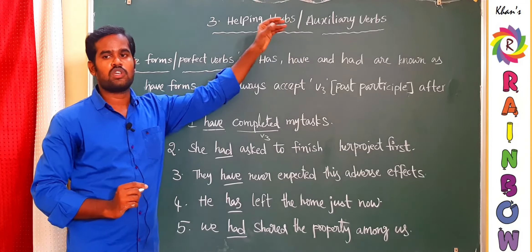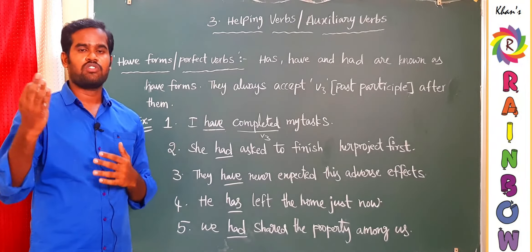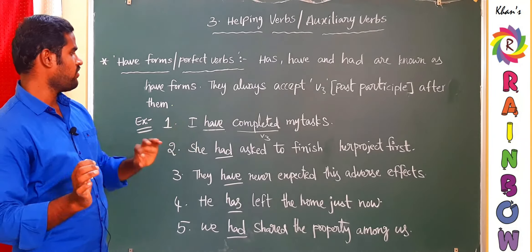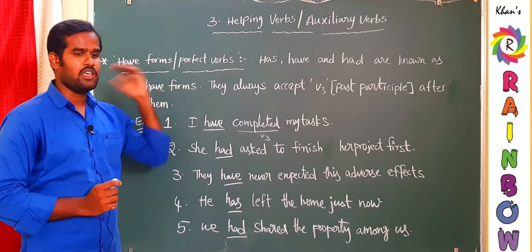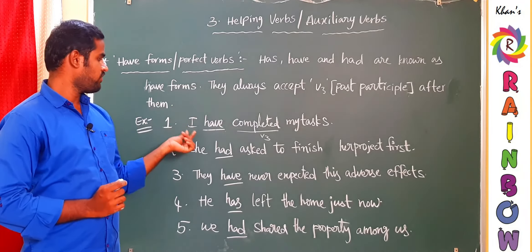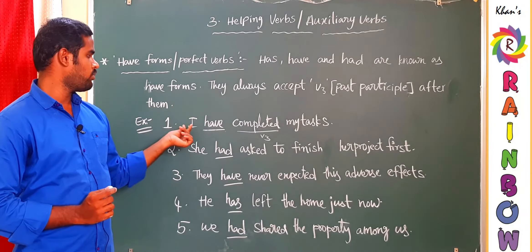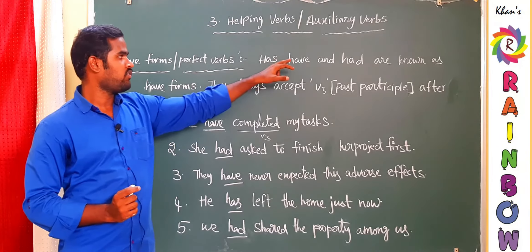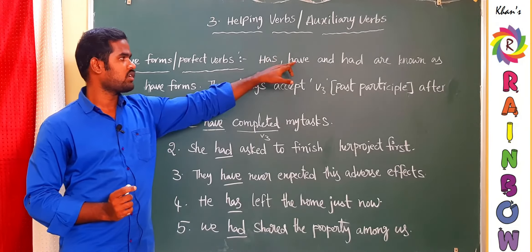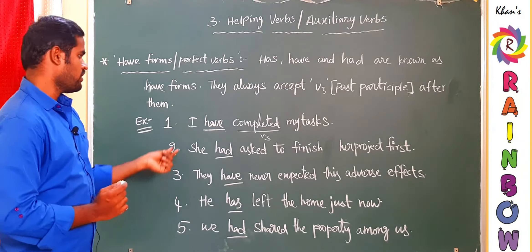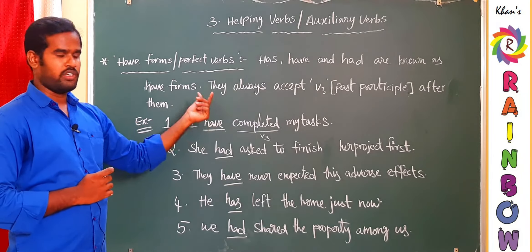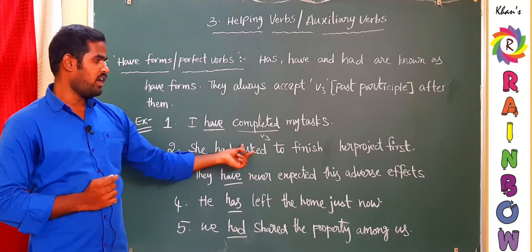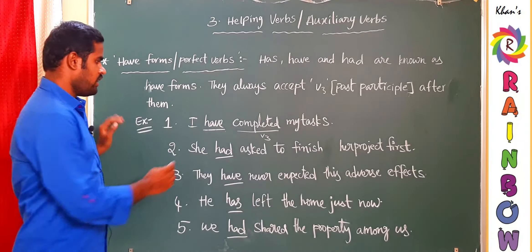The exception is for the first person singular 'I.' Even though 'I' is singular, we should not use 'has' — we must use 'have' only. For example: 'I have to go,' 'I have to teach,' 'I have to finish my work.' Do not use 'has' after 'I.' For all other singular subjects, use 'has.' Second example: 'She had asked to finish her project first' — 'had' is the perfect verb, and the verb after it is V3.